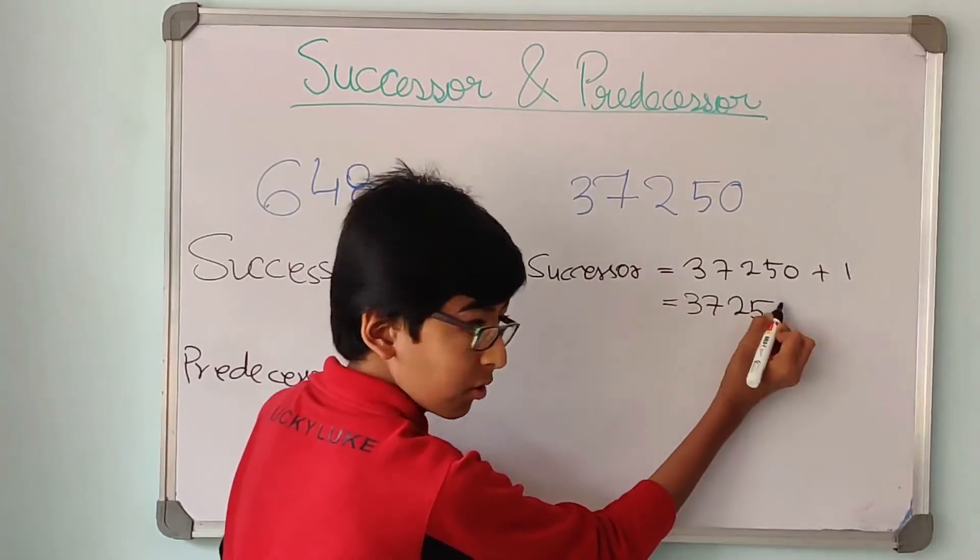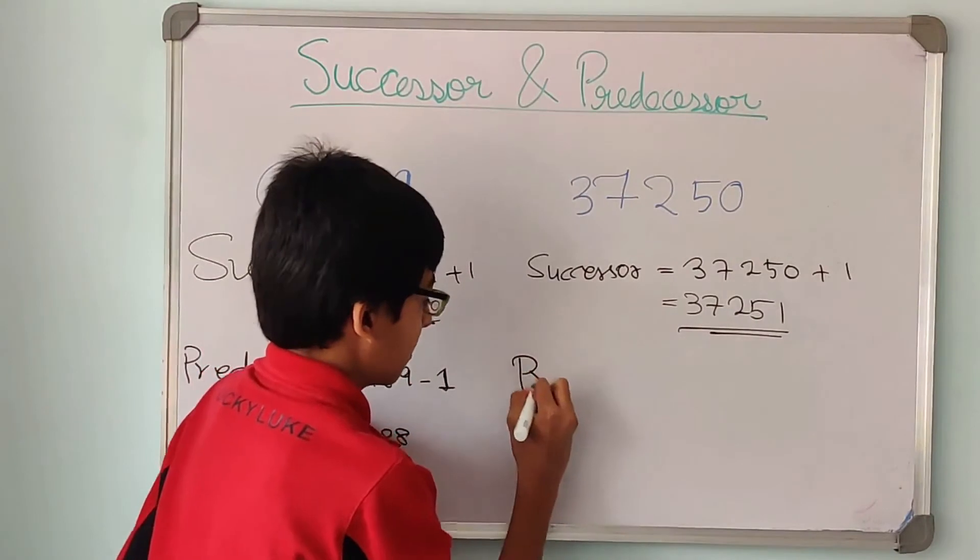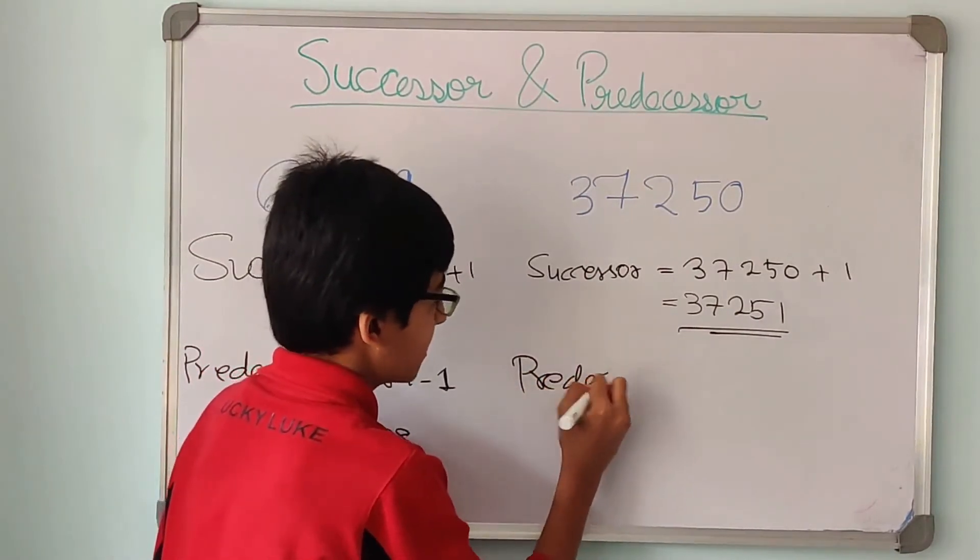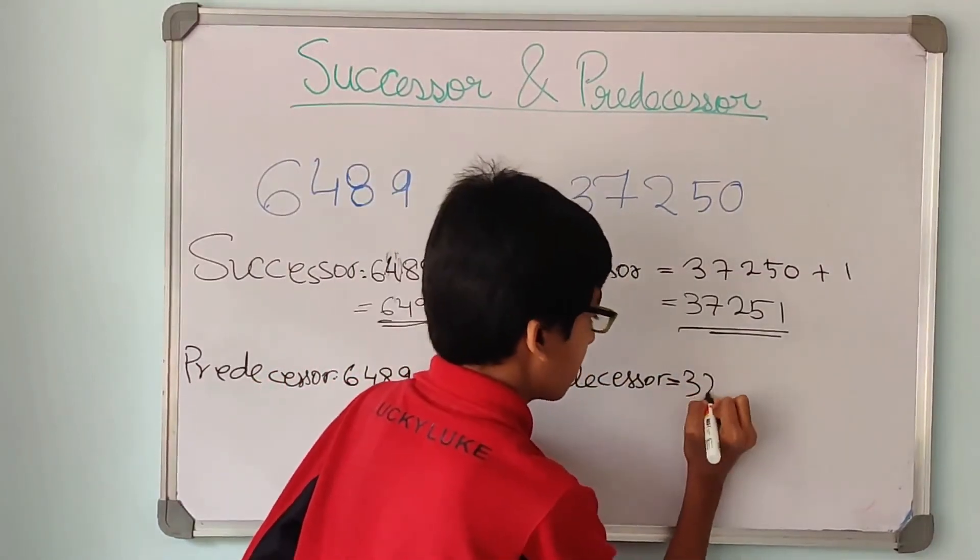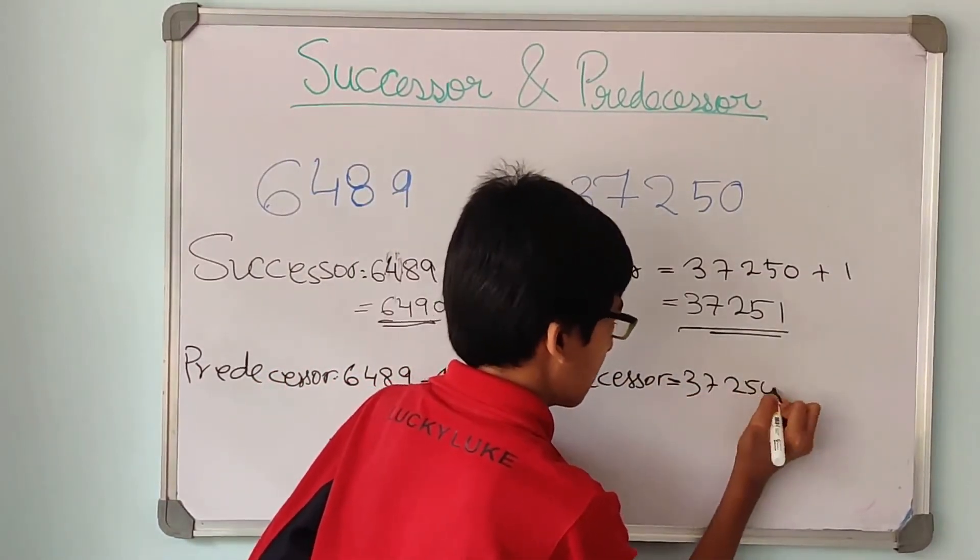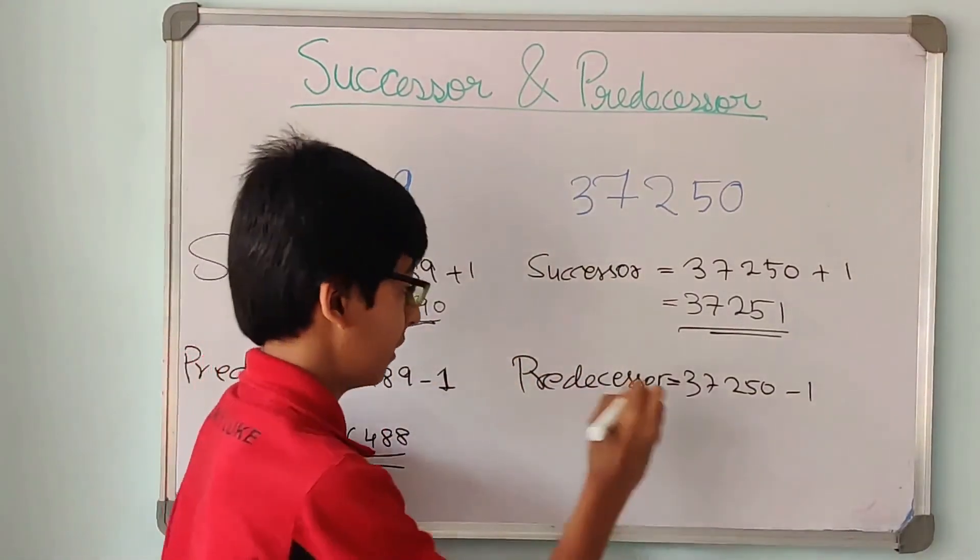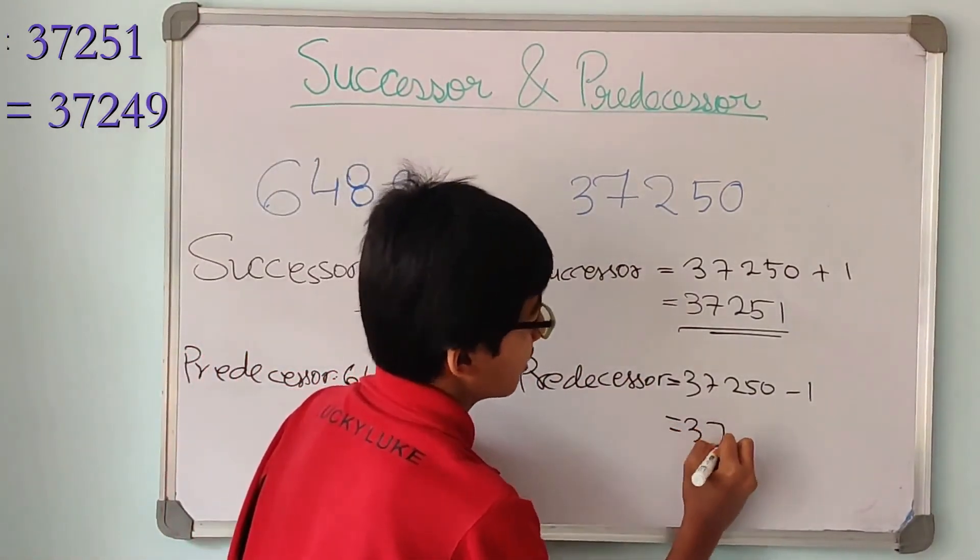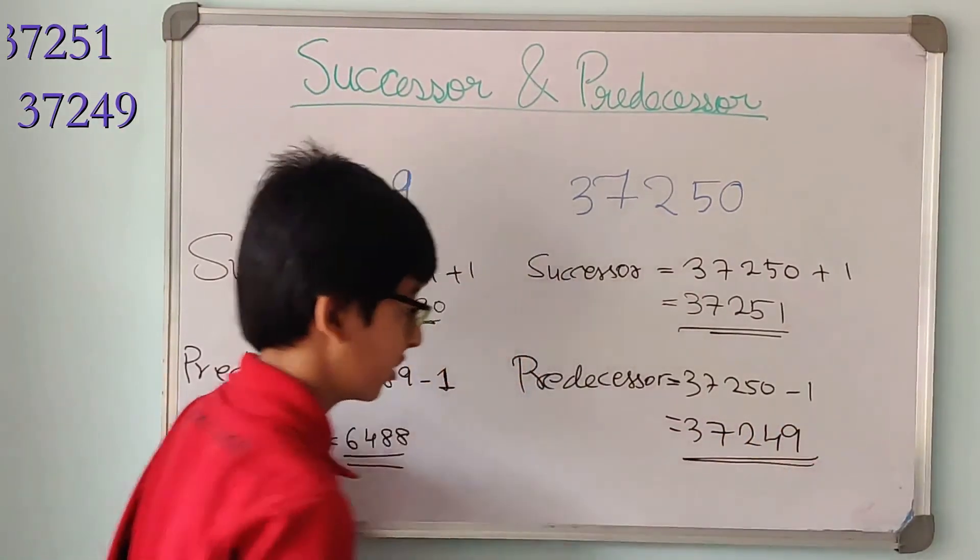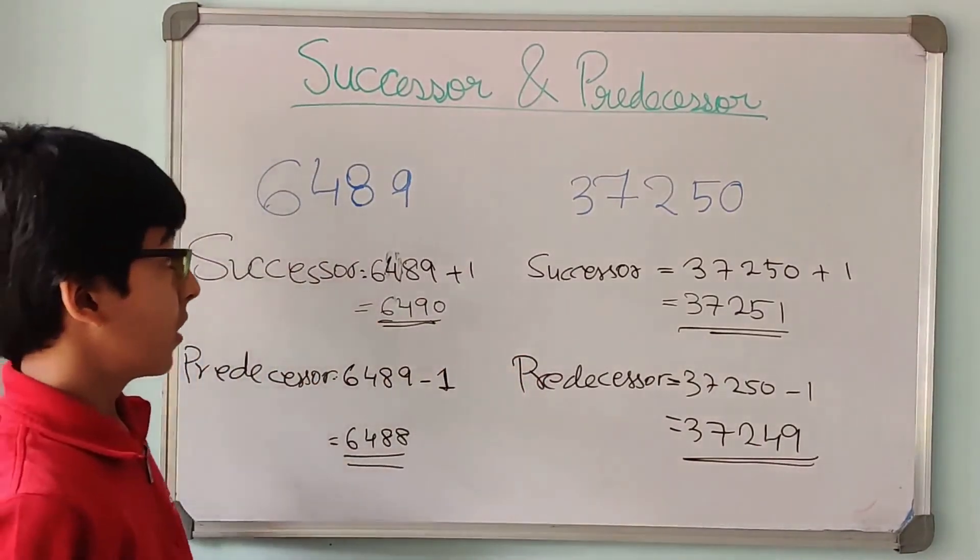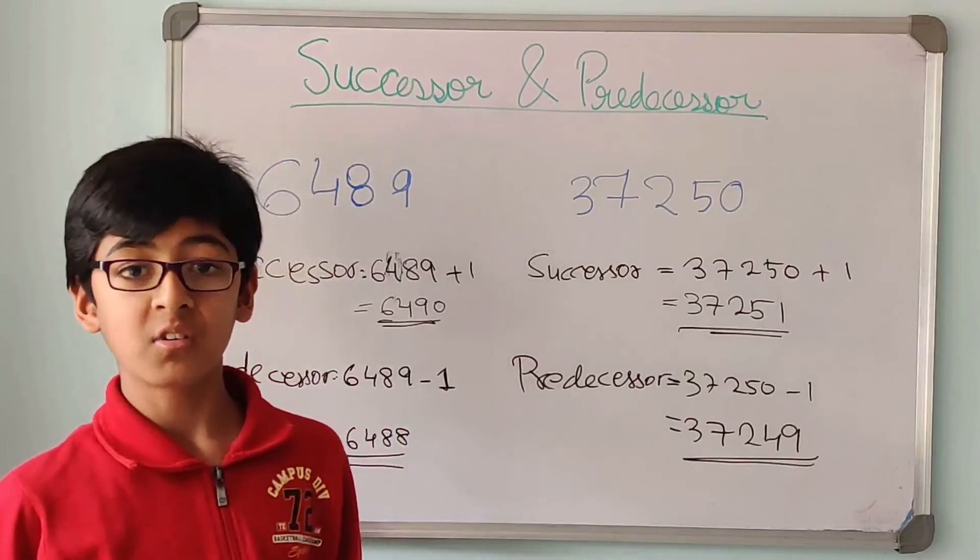Now let us find the predecessor of 37250. So 37250 minus 1 is going to give us 37249. Now let us solve an example before ending today's module.